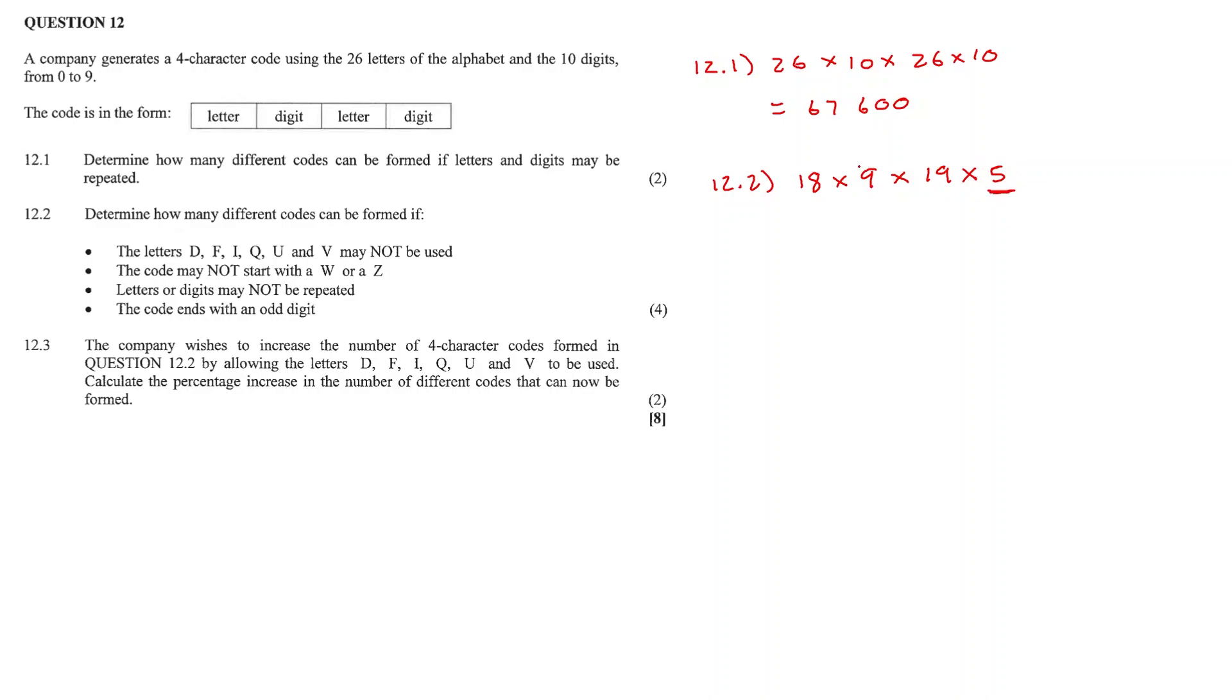We initially should have 10 digits here. But since we must have an odd digit in the last spot, we would put our five here first, five out of the 10 digits. And then one would be used and we would have nine remaining here. So that's why this is nine and not 10. Therefore, this would give us 15,390 codes.